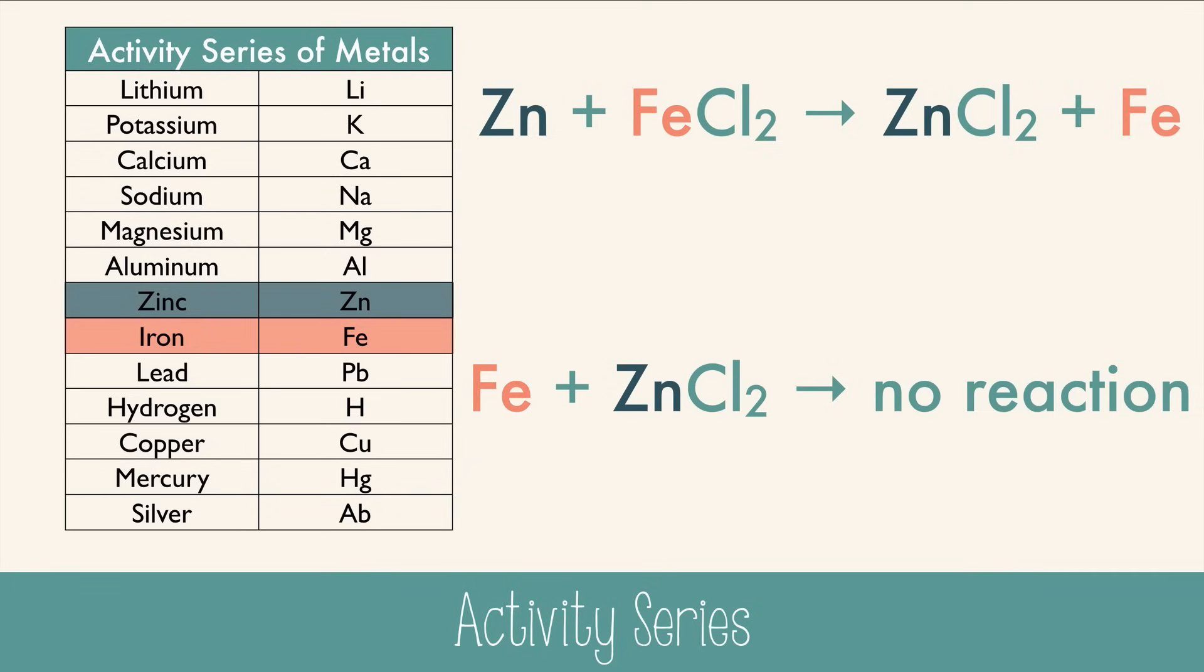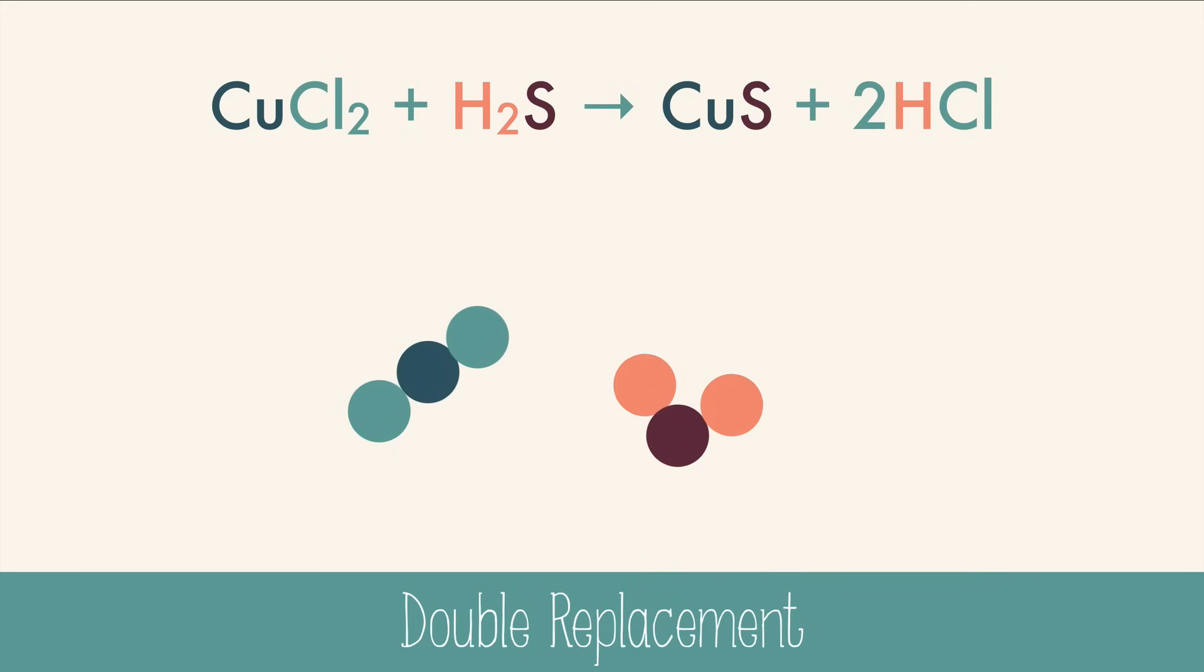Now let's look at the next type of reaction. Double replacement. This reaction is similar to single replacement, except we're starting with two compounds. The reaction has an exchange of positive ions between two compounds. In this example, copper 2 chloride and hydrosulfuric acid will swap their positive ions to make copper sulfide and hydrochloric acid.